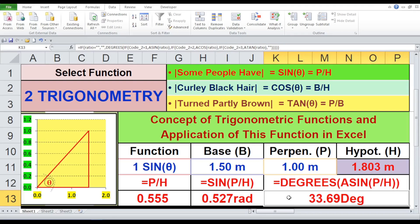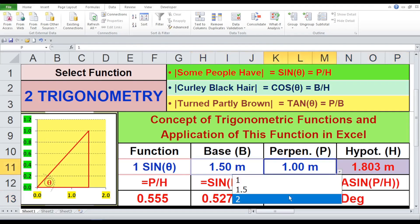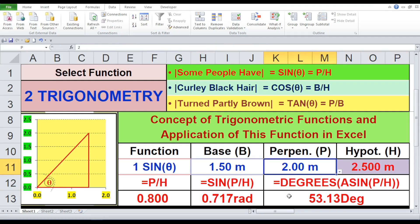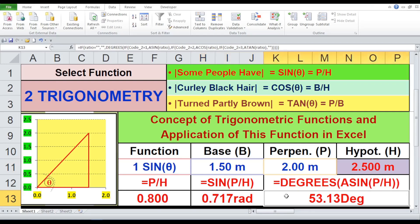Trial 3A, function sin. Now I am changing the value of the perpendicular from 1 meter to 2 meters. Hypotenuse H equals 2.5 meters. P by H equals 0.800. Sine P by H equals 0.717 radians. Base angle theta equals 53.13 degrees.